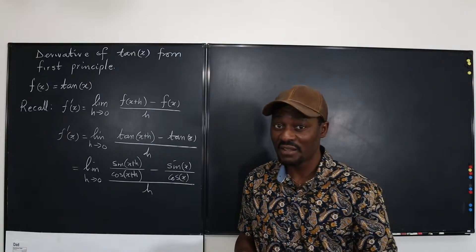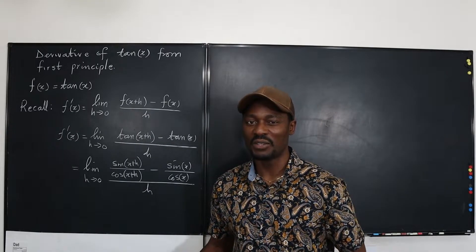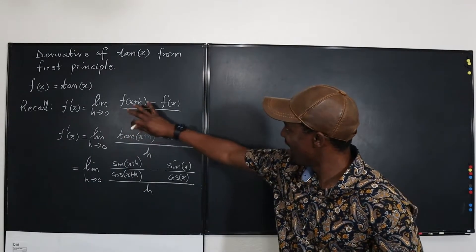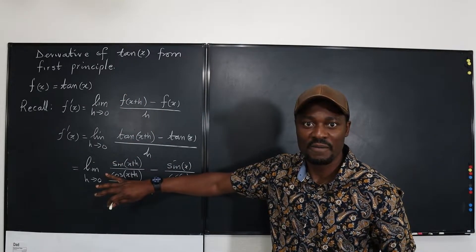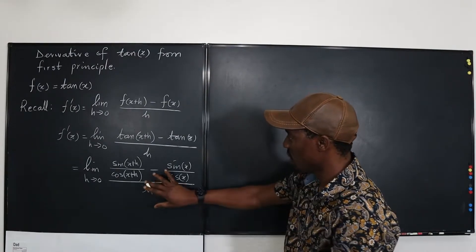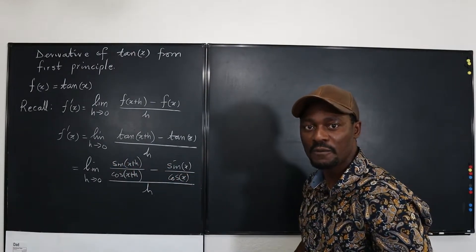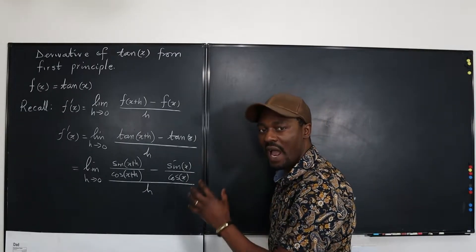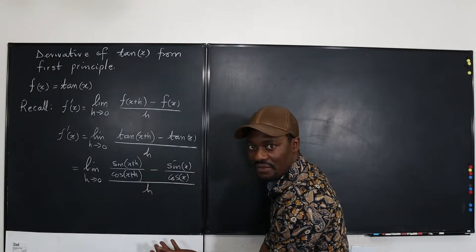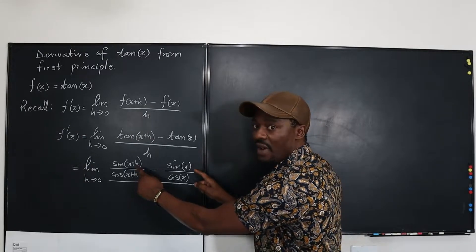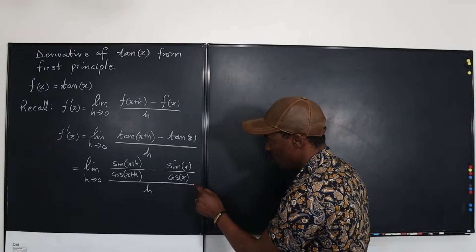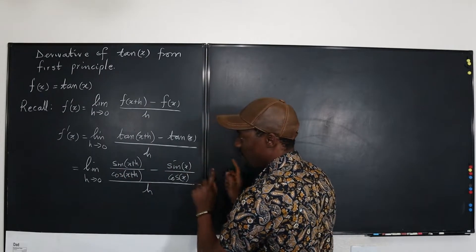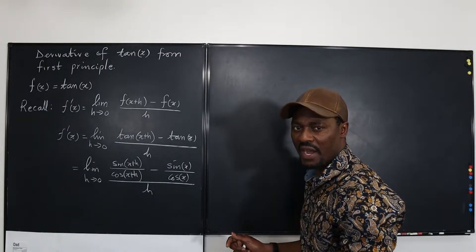The rest is algebra. Differentiating from first principles is basically algebra — there's almost zero calculus in it. The only calculus is the definition at the beginning and taking limits. Now we want to simplify this complex fraction. When you have a fraction within a fraction, look at the two denominators on top and use them to multiply each term — things will simplify nicely.